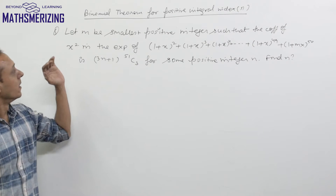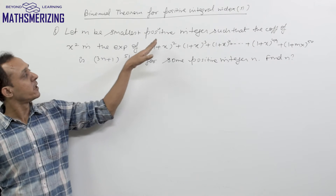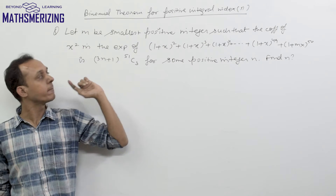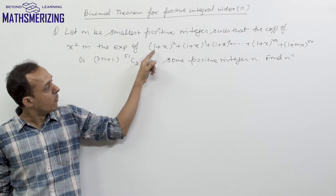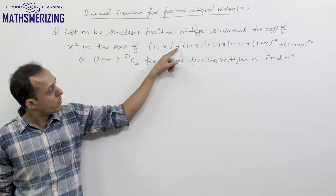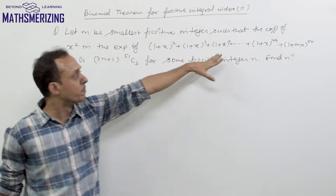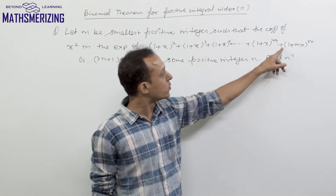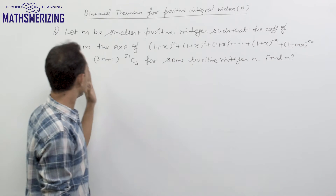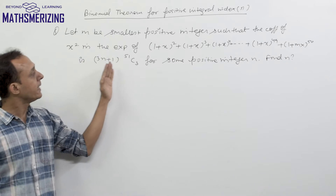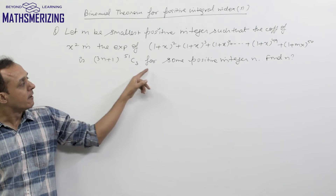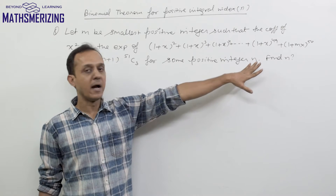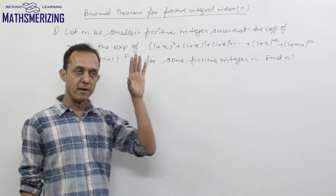The question is: let n be the smallest positive integer such that the coefficient of x² in the expansion of (1+x²)(1+x³)(1+x⁴)... up to 49, plus (1+mx)^50 is (3n+1)·⁵¹C₃ for some positive integer n. We need to find the value of n.